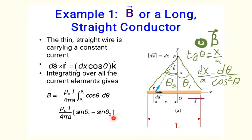If theta_1 is larger than theta_2, B points out of the screen as shown in the figure. Otherwise, if theta_2 is larger than theta_1, this expression is negative and B points into the screen. So here we have obtained the magnetic field of a wire of an arbitrary length L.